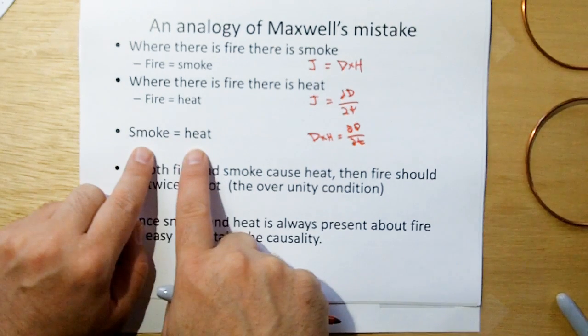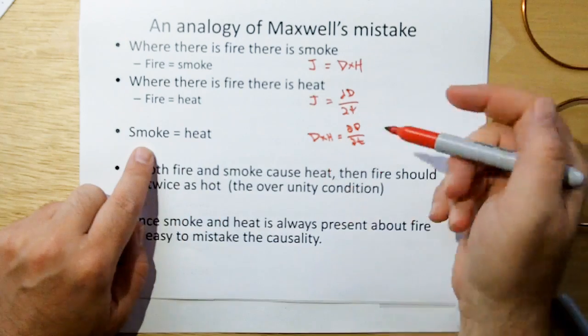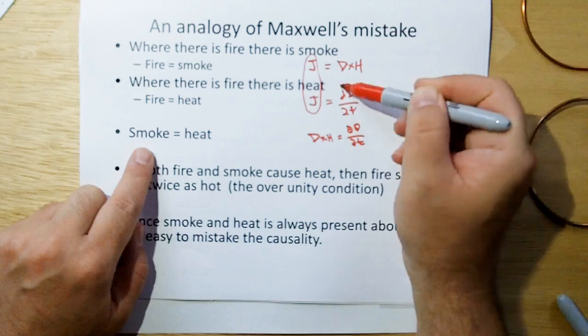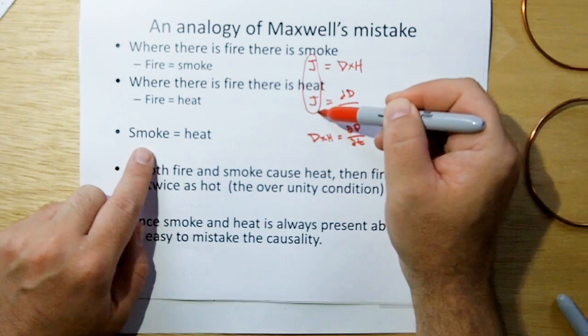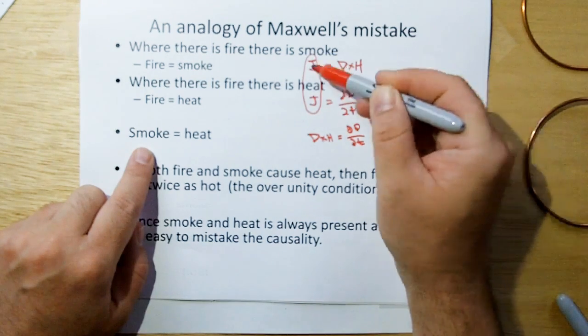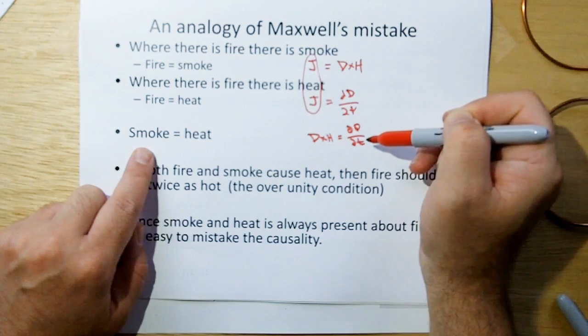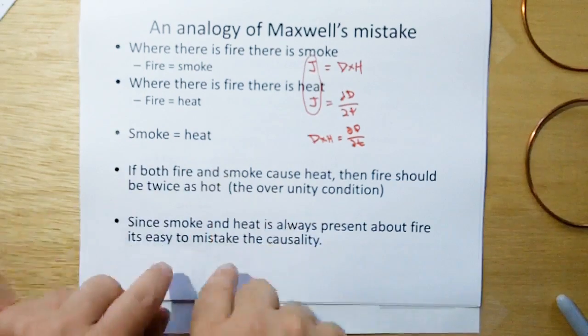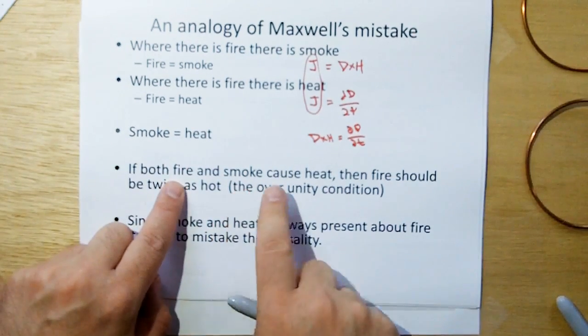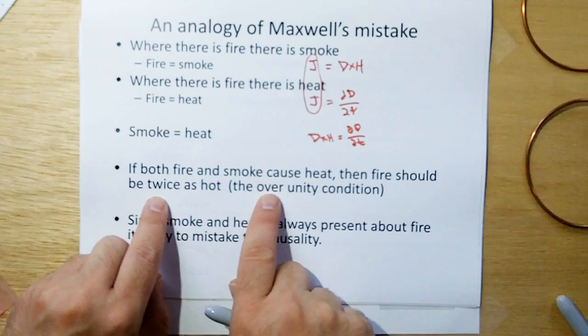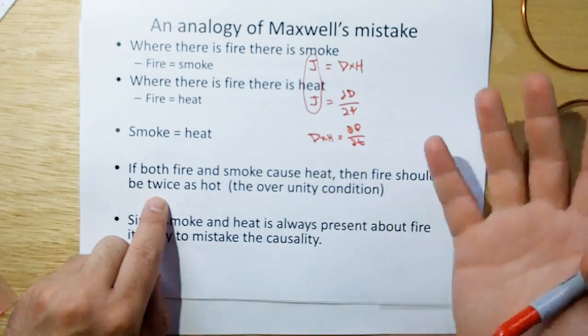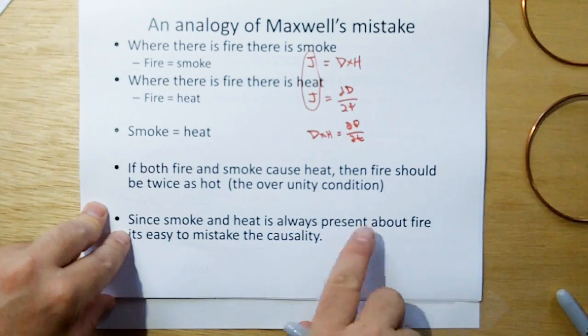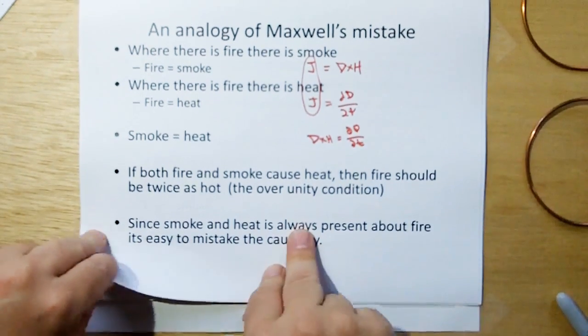And there is where we get the problem. As we're saying here that since it's only the current that causes these things, and if we put the current together, we could make the false assumption that the two products of current cause each other. And that's where the flaw is. That's the same thing as saying that smoke causes heat. Because if you go on with this analogy, if both fire and smoke cause heat, then fire should be twice as hot. And that's the mistake we got before with the over unity. But since smoke and heat is always present about fire, it's easy to make this mistake of causality.